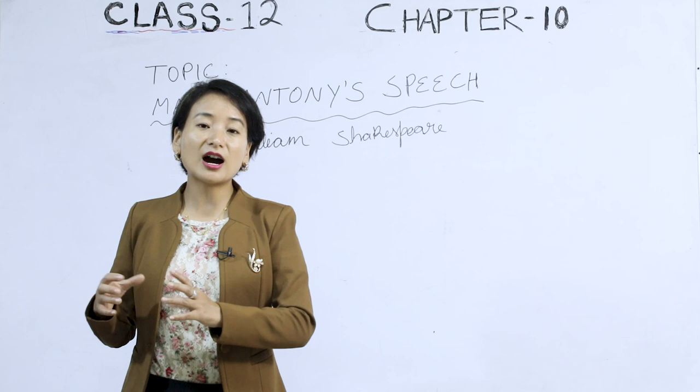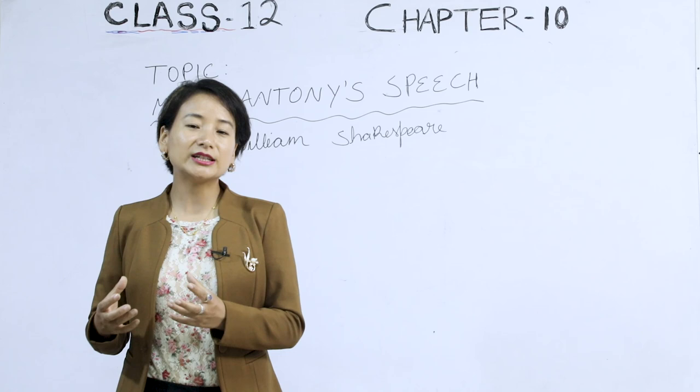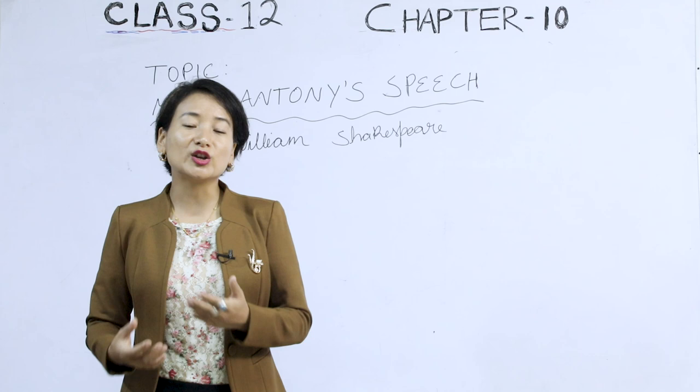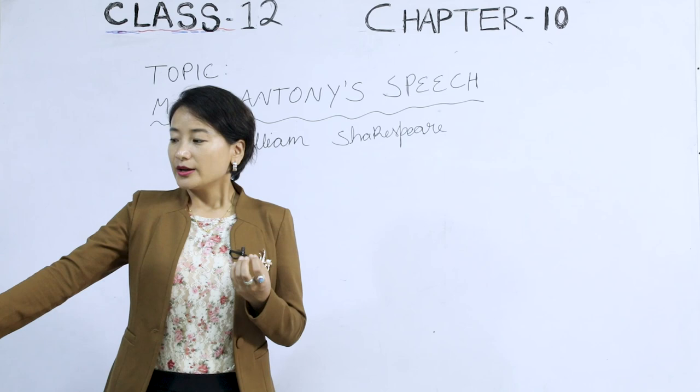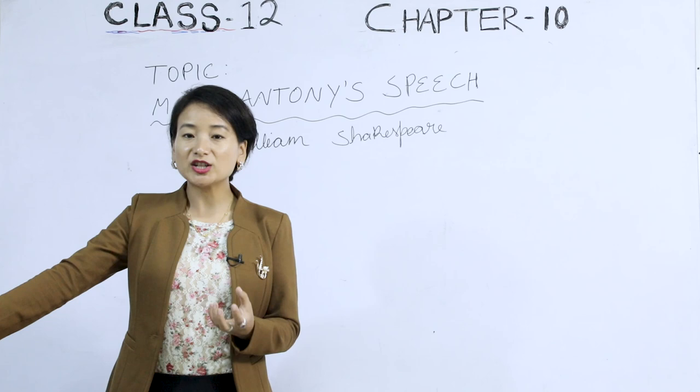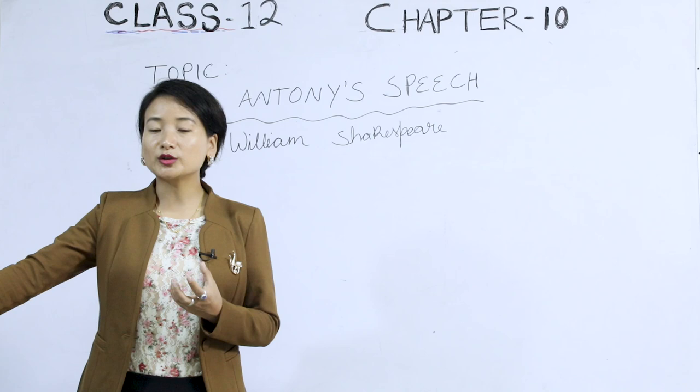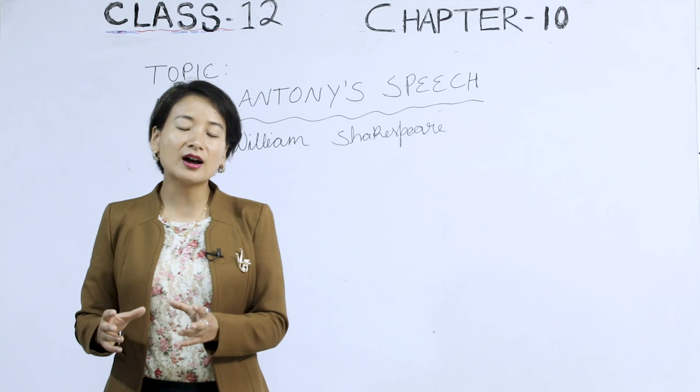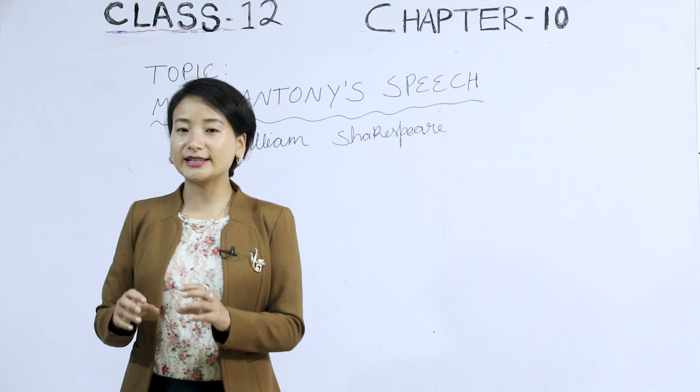What did Mark Anthony say to the people in order to make them take a U-turn in their opinion? Anthony's speech persuaded the people of Rome to change sides again, and turned them into a rioting mob — there was a lot of chaos after that. When we look at the text, it is very important to understand the subtext — in other words, what is meant besides what has been said — because the subtext gives us a lot of meaning.